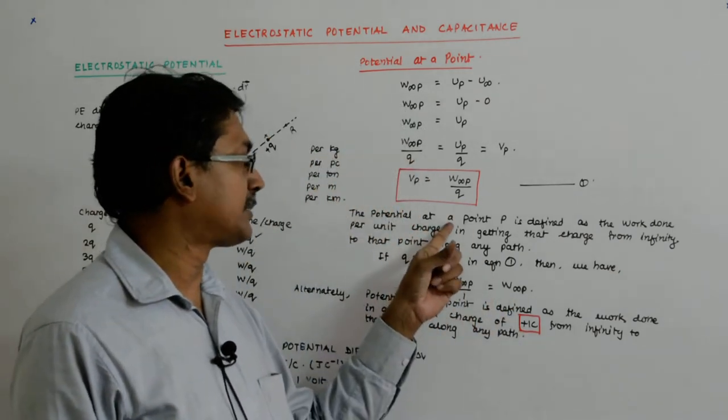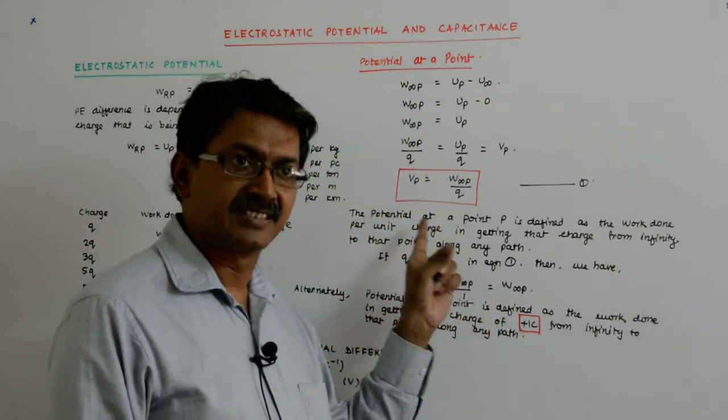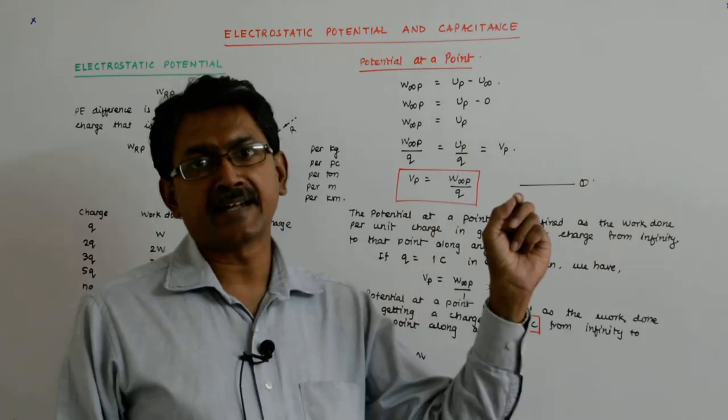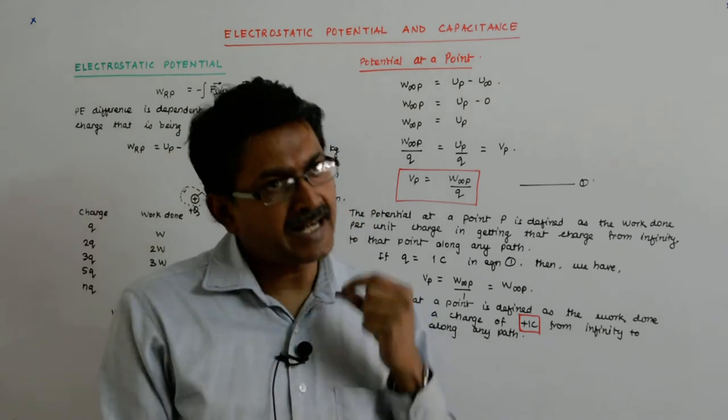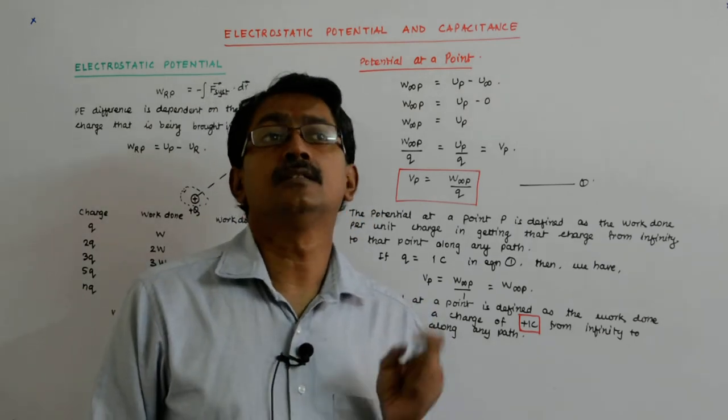Infinitesimally, that's what I'm saying. So what I'll be doing is this: you will be bringing an infinitesimally small charge, find out the work done, divided by that infinitesimal amount of charge to get the potential at that point.